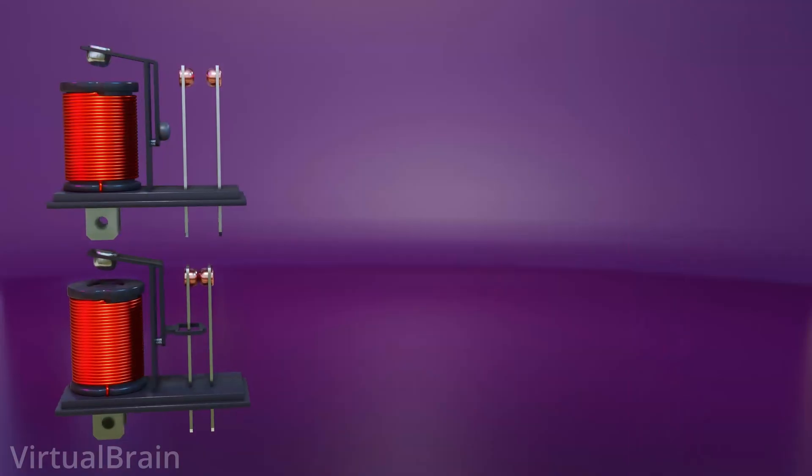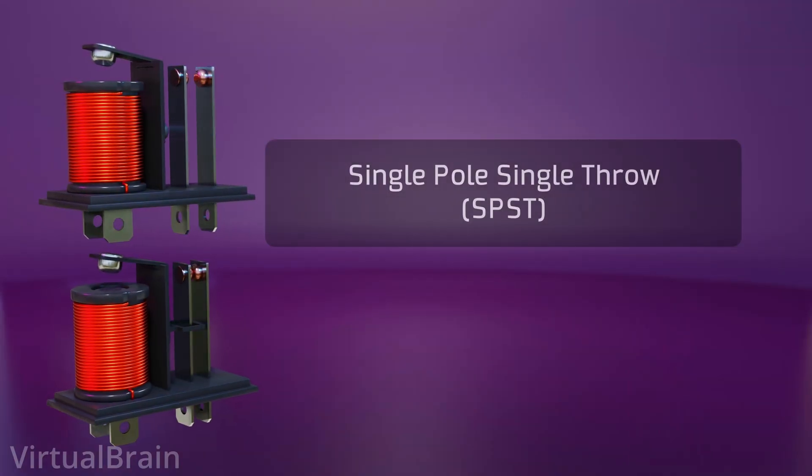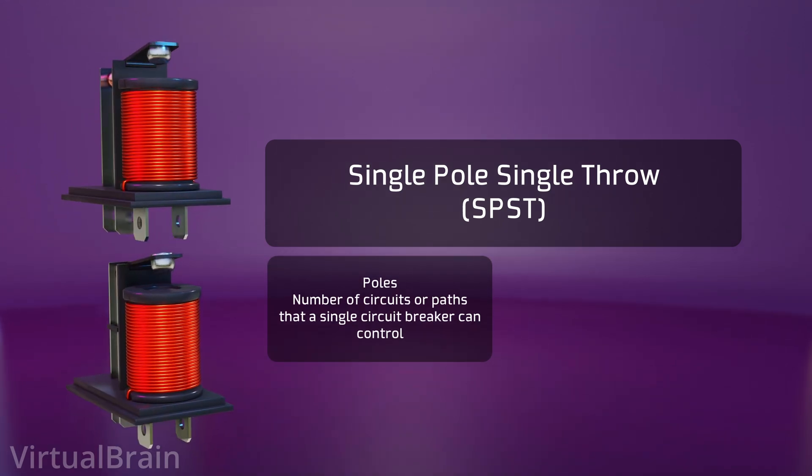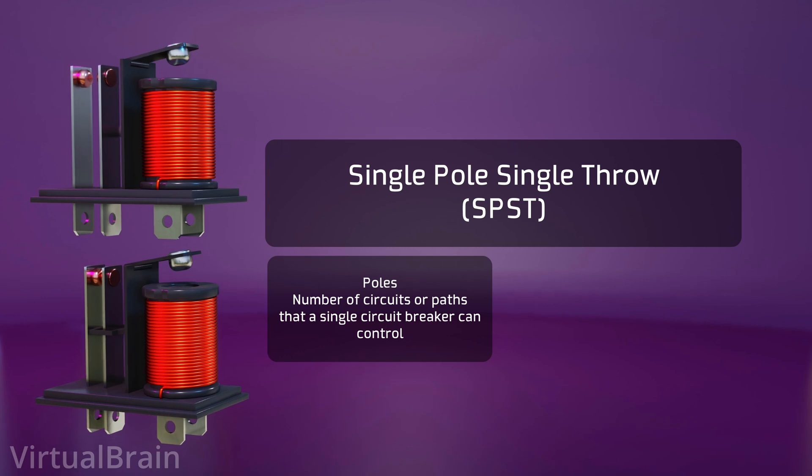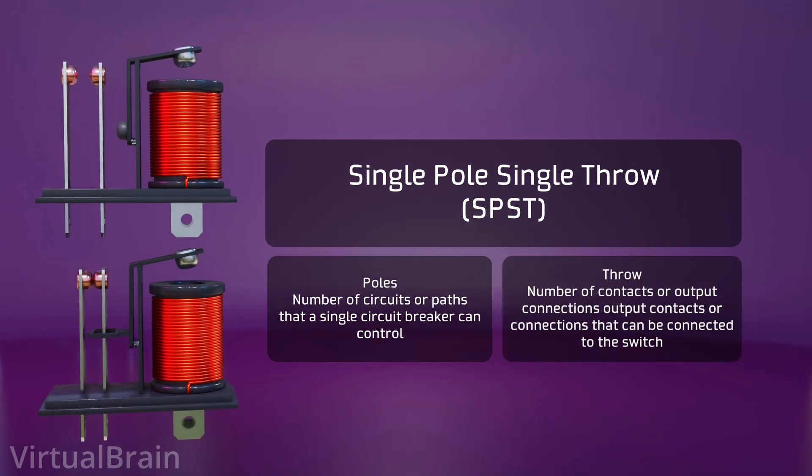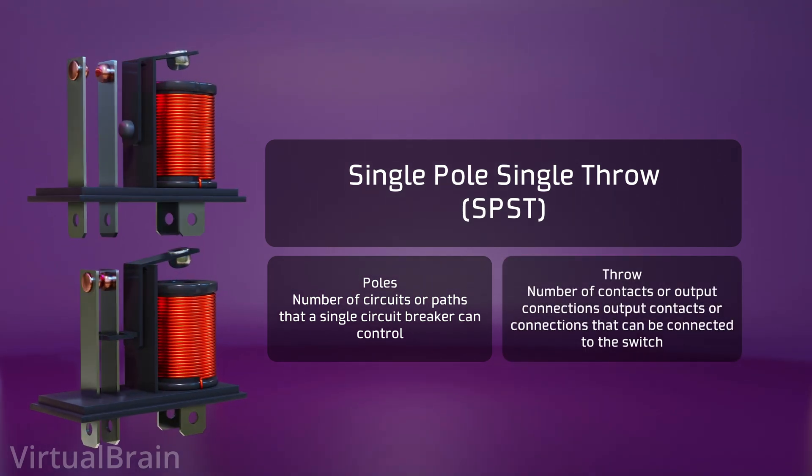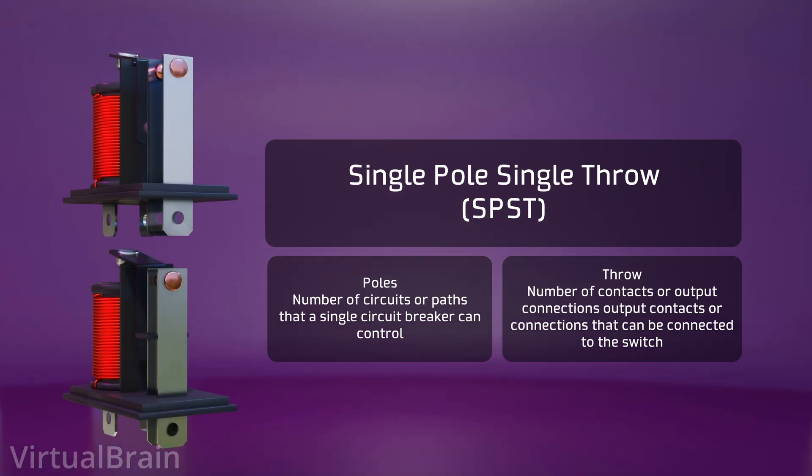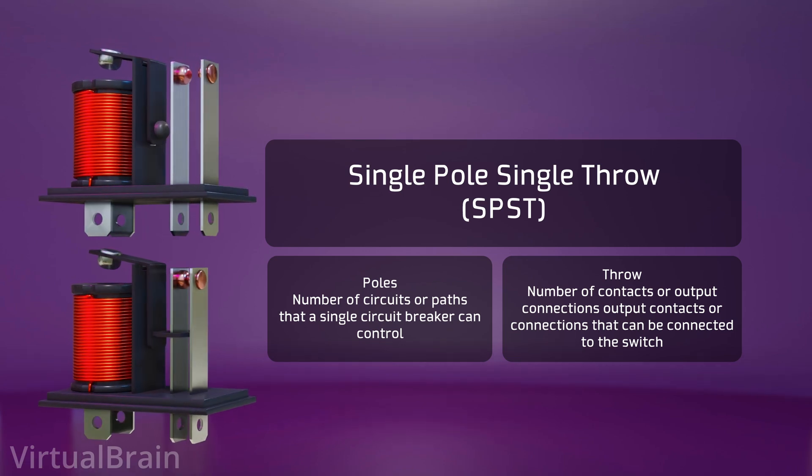These two types of relays are known as single pole and single throw, where the number of poles refers to the number of different circuits or paths that a single switch can control, and the number of throws refers to how many different contacts or output connections can be connected to the switch. Just so you don't get confused, we will now look at this with some examples.